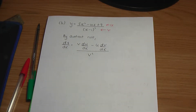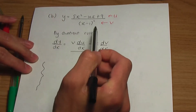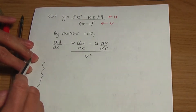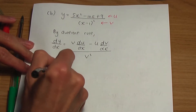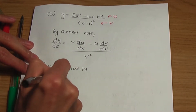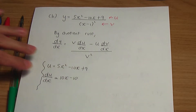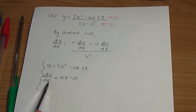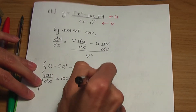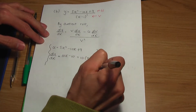Back to the example. I need du/dx and dv/dx for this rule to be applied. u is the numerator term, which is 5x squared minus 10x plus 9. When I differentiate that, du/dx will be 10x minus 10. Let me take a common factor of 10 to leave me with 10 times x minus 1. So that is what you should get for du/dx.